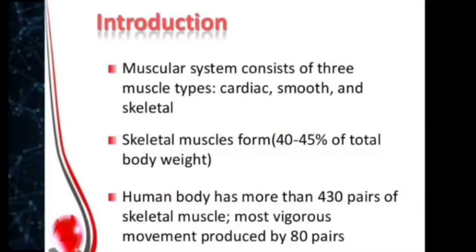The muscular system consists of three muscle types: cardiac, smooth, and skeletal. Skeletal muscles form 40 to 45% of total body weight. The human body has more than 430 pairs of skeletal muscle.